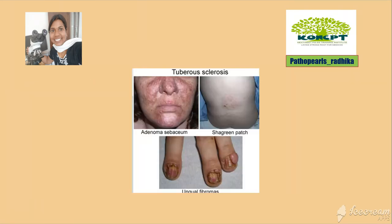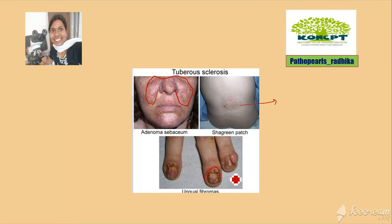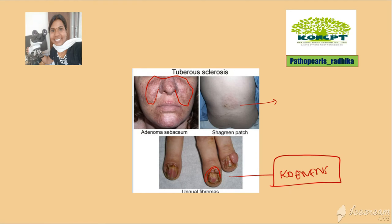What about tuberous sclerosis, the first option? It is a neurocutaneous disorder with neurological and dermatological manifestations. You can have adenoma sebaceum — multiple lesions in the malar area of the face. Remember, that's a misnomer; it's not a tumor of sebaceous glands. You can have leathery patches called shagreen patches, and fibromas beneath the nails called subungual fibromas or Koenen's tumor.